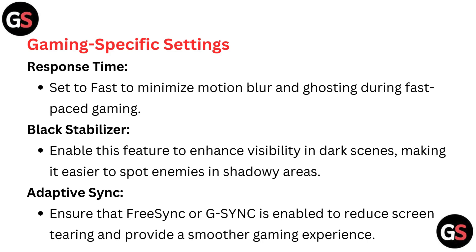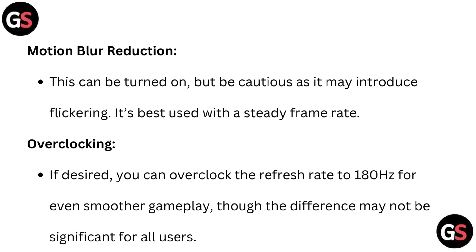Adaptive sync: ensure that FreeSync or G-Sync is enabled to reduce screen tearing and provide a smoother gaming experience. Motion blur reduction: this can be turned on, but be cautious as it may introduce flickering — it's best used with a steady frame rate. Overclocking: if desired, you can overclock the refresh rate to 180Hz for even smoother gameplay, though the difference may not be significant for all users.